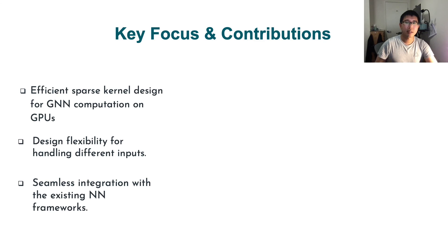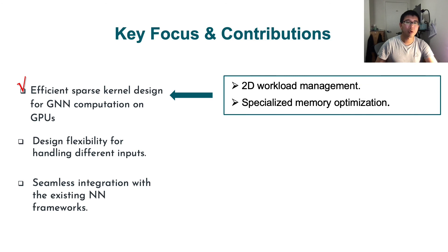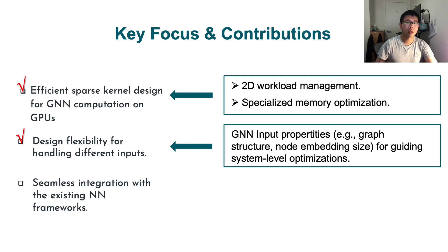Let's summarize our key focus and contributions in this paper. First, we provide an efficient sparse kernel design for GNN computation on GPUs. In order to do that, we carry out our 2D workload management and specialized memory optimization. Second, we offer our design flexibility for handling different inputs. In order to do that, we leverage the GNN input-level properties, for example, like the graph structure and embedding sizes, for guiding the system-level optimizations.